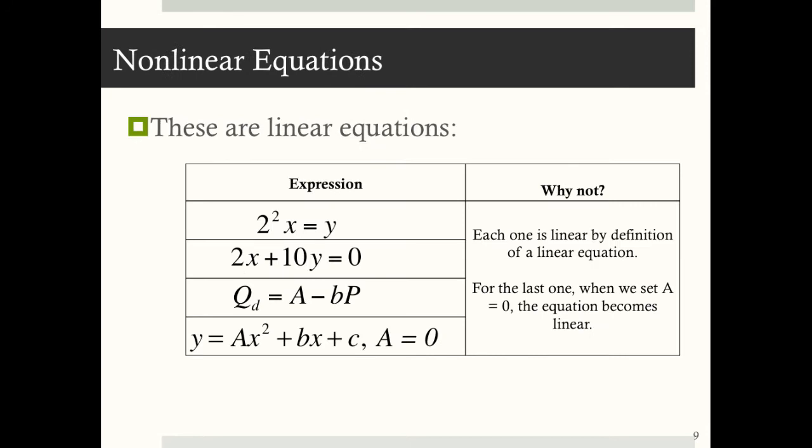These expressions are examples of linear equations. 2 squared x equals 1. 2x plus 10y equals 0. Q sub d equals a minus bp. And the last equation here may be a little tricky, because at first it looks like a nonlinear equation. It says y is equal to ax squared plus bx plus c. So you see that's square above the x. But reading on, you see further that, hey, you have to impose that a equals 0 on this equation. And when you do that, the equation actually simplifies to a linear equation.